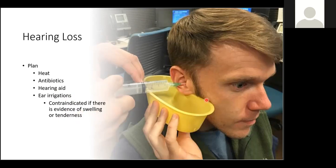To perform ear irrigation, you want the patient tilting their head toward the affected side. Use your syringe and direct a stream of fluid against the sides of the ear canal — not against the eardrum, but against the sides. This dislodges the wax or whatever is occluding the canal. After the procedure, instruct the client to lie on the affected side so that all of the fluid drains out.